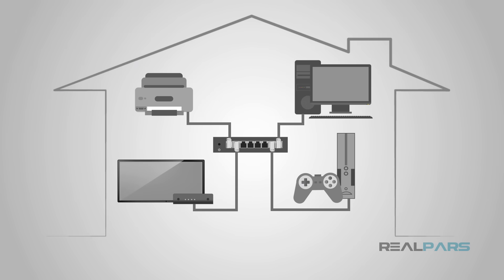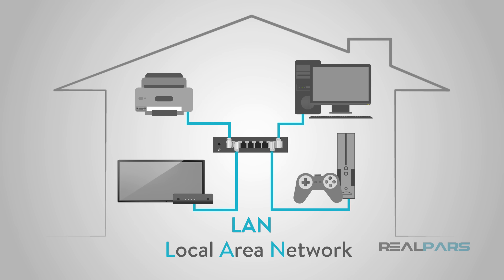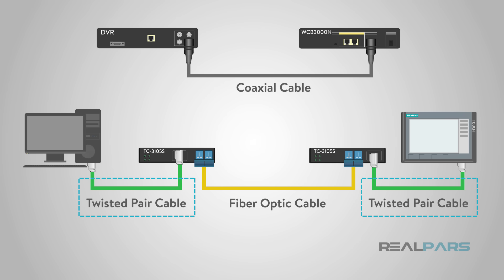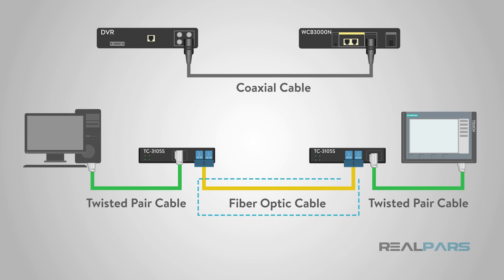Ethernet is a communication standard that was developed in the early 80s to network computers and other devices in a local environment such as a home or a building. This local environment is defined as a LAN, or Local Area Network, and it connects multiple devices so that they can create, store, and share information with others in the location. Ethernet is a wired system that started with using coaxial cable and has successfully progressed to now using twisted pair copper wiring and fiber optic wiring.